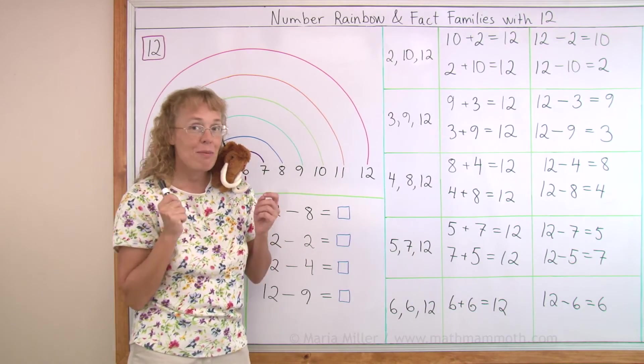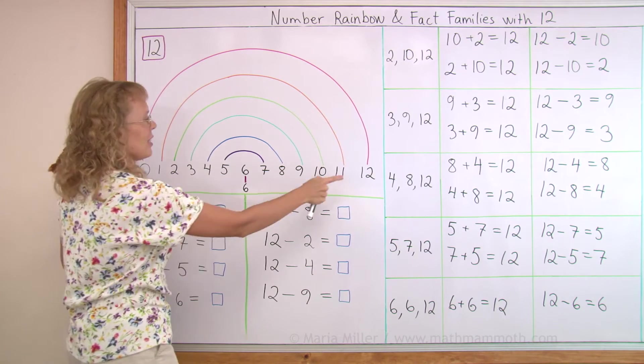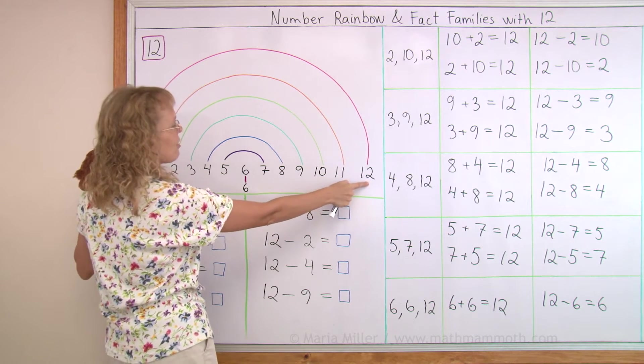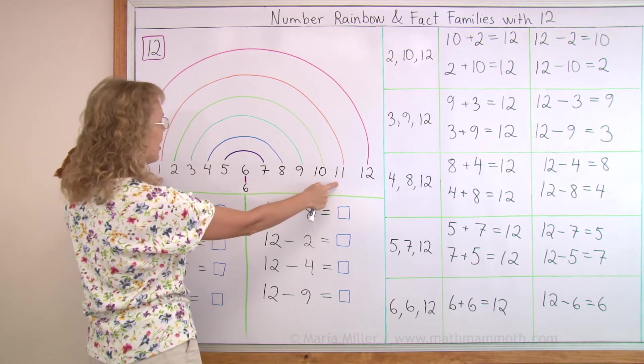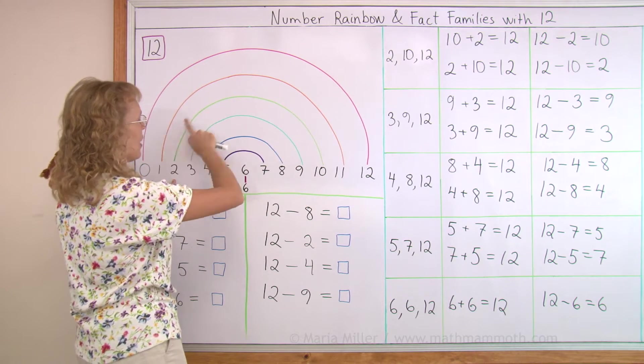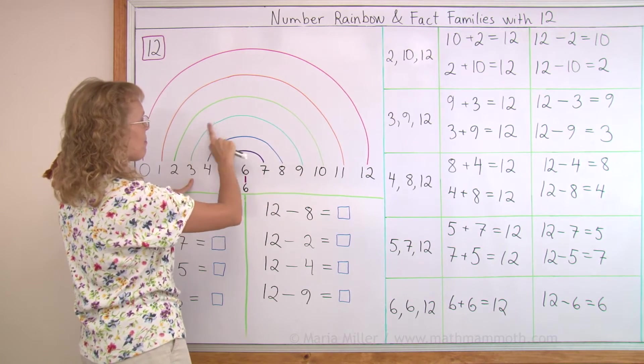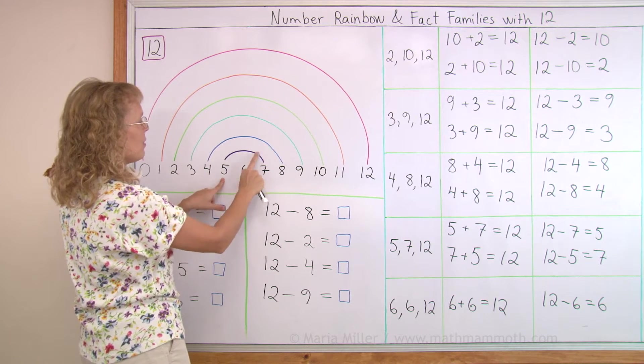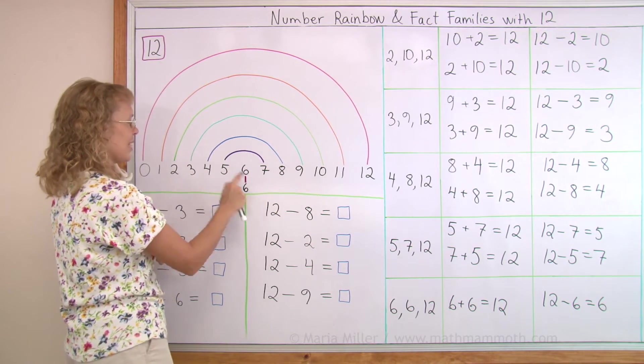And let's review those same things in the number rainbow. 0 and 12. Well, I didn't write a fact family for that. Neither for 1 and 11. But then here they are. 2 and 10. And then 3 and 9. 4 and 8. 5 and 7. And 6 and 6.